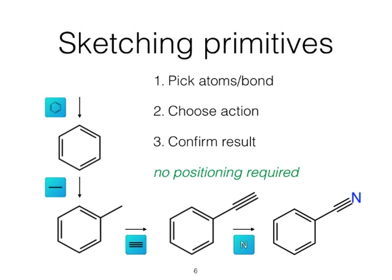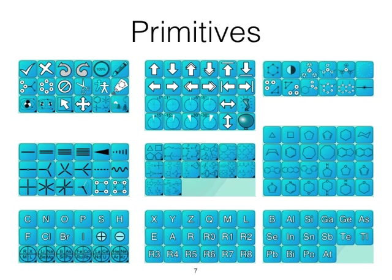A very concise overview: the procedure for drawing structures is that we select some number of atoms and bonds, pick which action we want to do, and the underlying algorithm will interpret your starting structure, your selection, and your menu choice. It will then propose a solution — or in some cases more than one. For the most part, if you choose wisely, that's going to be what you actually want to accomplish. To do this, we need a fairly large collection of primitives. These can be daunting for the initial user, but this is a powerful set of drawing tools arranged in a fairly logical way.